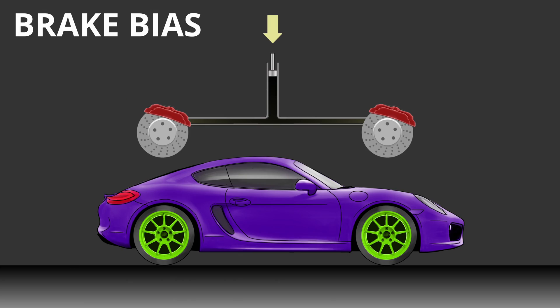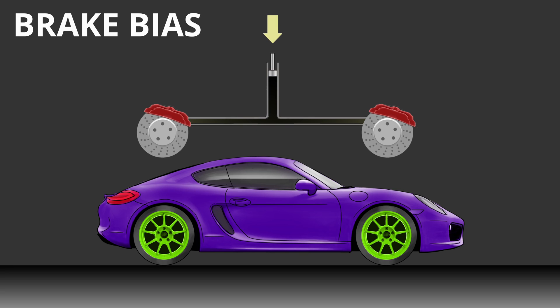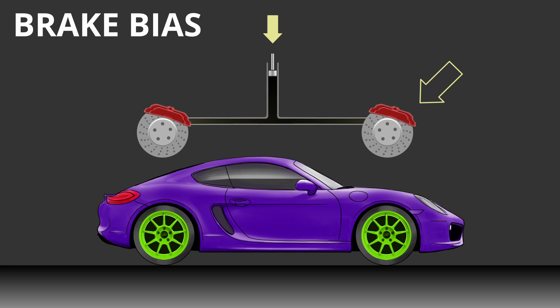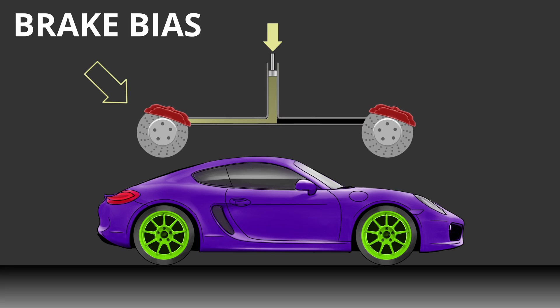So let's quickly talk about what brake bias is. When you press on the brakes, brake bias determines how much of that brake pressure goes to your front brakes and how much of that brake pressure goes to your rear brakes.